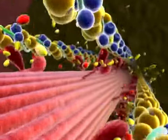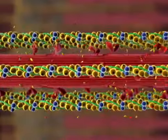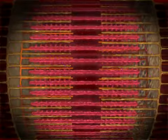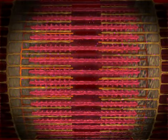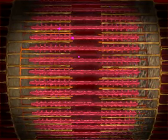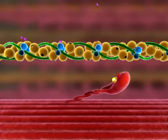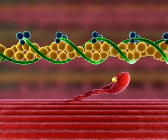As long as the binding sites on actin remain exposed, the crossbridge cycle will repeat. And as the cycle repeats, the thin myofilaments are pulled toward each other and the sarcomere shortens, causing the whole muscle to contract. Crossbridge cycling ends when calcium ions are actively transported back into the sarcoplasmic reticulum. Troponin returns to its original shape, allowing tropomyosin to glide over and cover the myosin binding site on actin.